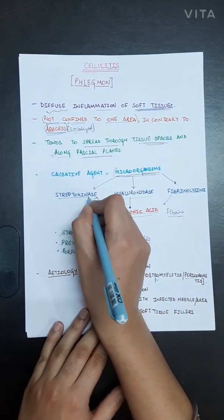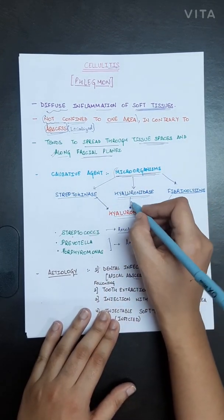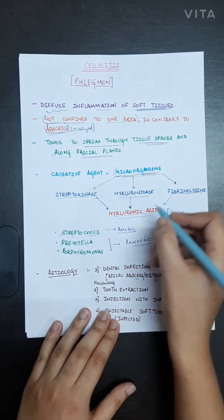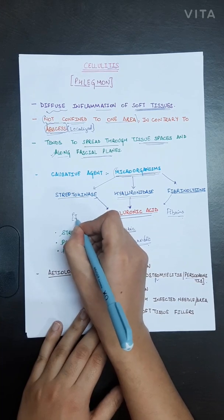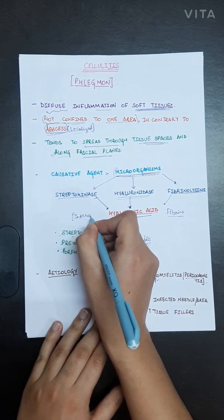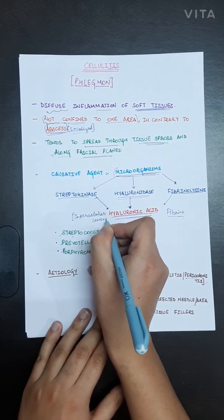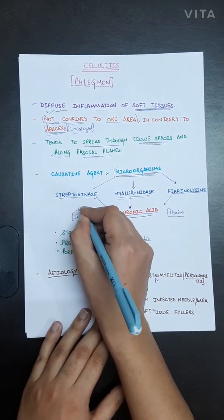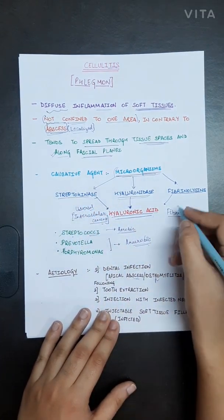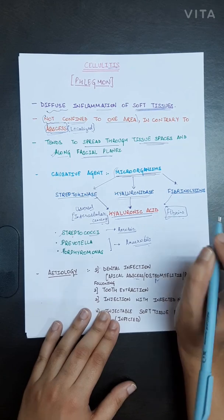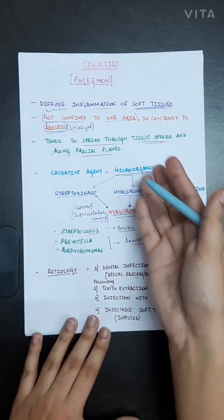The microorganisms will produce enzymes such as streptokinase, hyaluronidase, and fibrinolysin. These enzymes will dissolve hyaluronic acid, which is an intercellular cement, and also fibrins. This way the microorganisms cause cellulitis.